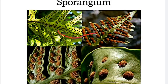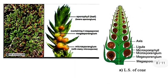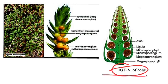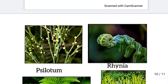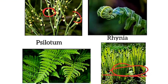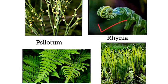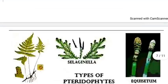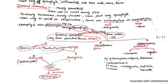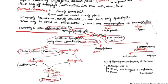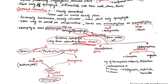The sporangium structure can be seen on leaf-like structures called sporophylls. Sporophylls bear sporangia, and inside sporangia are spore mother cells. If sporophylls form a special aggregated structure, that is called a strobilus.